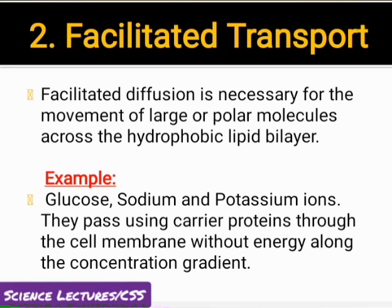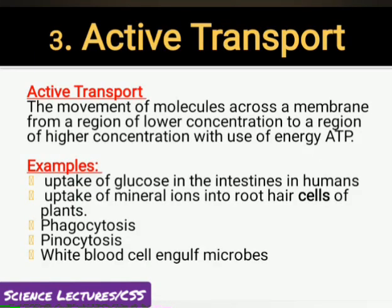Second type is facilitated transport, which occurs with the help of integral proteins. یہ larger size particles like glucose, sodium, اور potassium ions کو high concentration region سے low concentration region کی طرف movement کرواتے ہیں۔ Third kind of transport is active transport — it takes place against the concentration gradient, meaning molecules move from low concentration to high concentration, and it is carried out with the use of ATP energy.